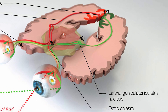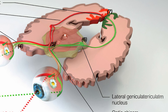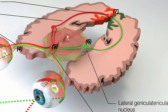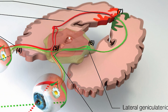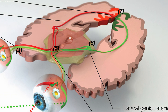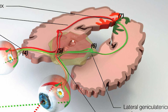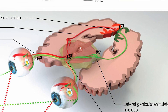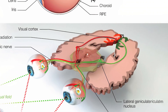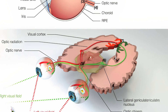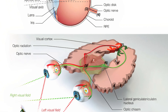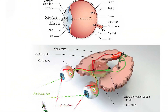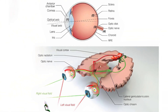The brain then processes these signals, reconstructing them into the visual images that allow us to interpret our surroundings. This intricate cascade — from the initial refraction of light to the final neural interpretation — ensures that the human eye functions as a highly efficient, precise instrument for vision.